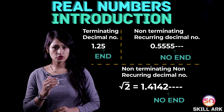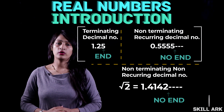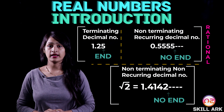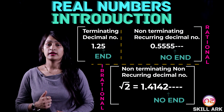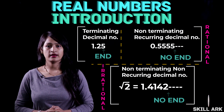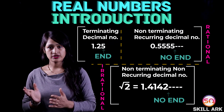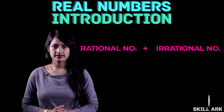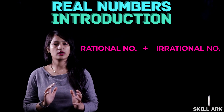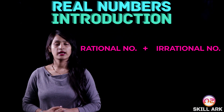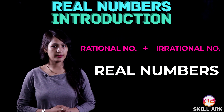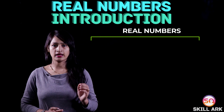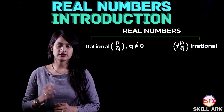Now, among these three types of decimal numbers, terminating decimal numbers and non-terminating recurring decimal numbers together form rational numbers, while non-terminating non-recurring decimal numbers form irrational numbers. Rational numbers plus irrational numbers equal real numbers. So real numbers are divided into two parts: rational numbers and irrational numbers.